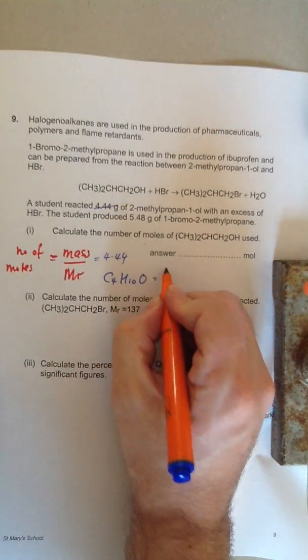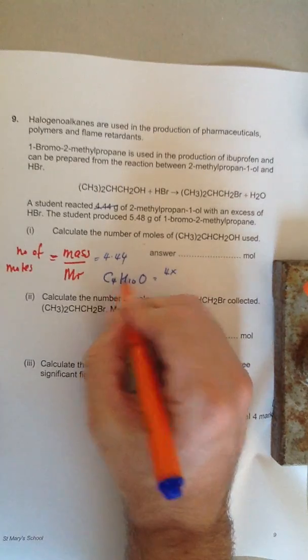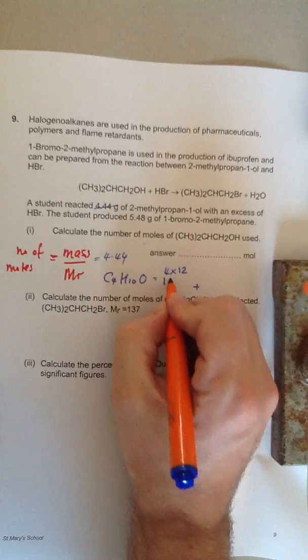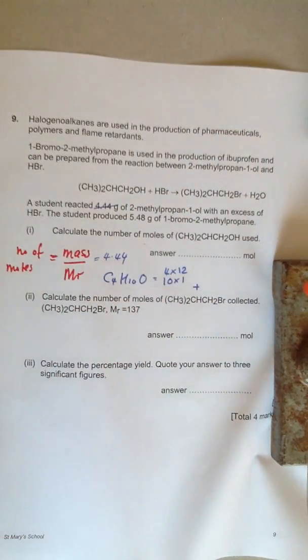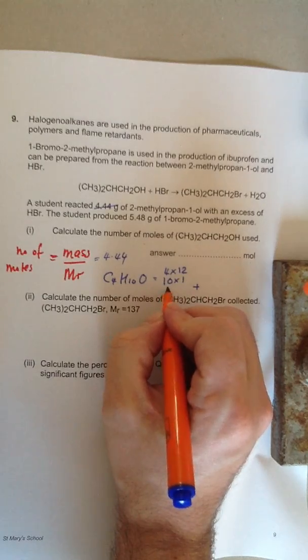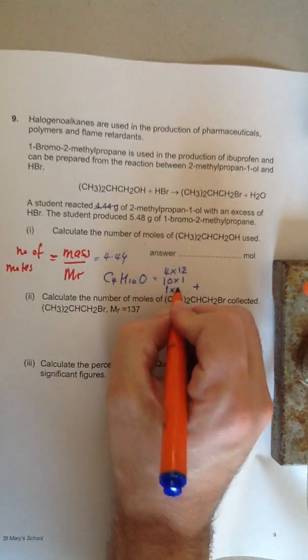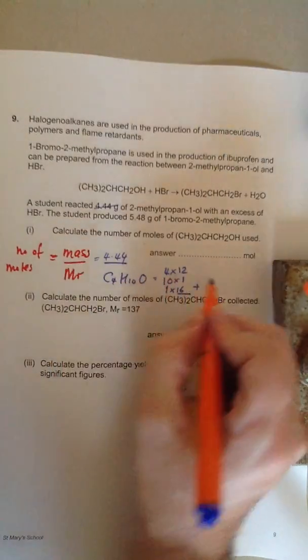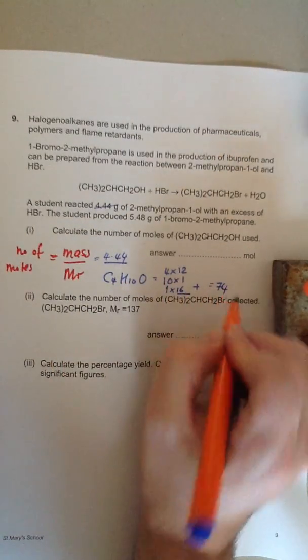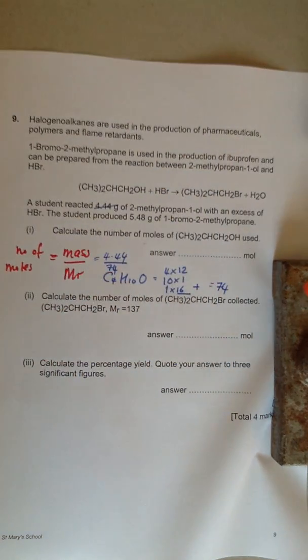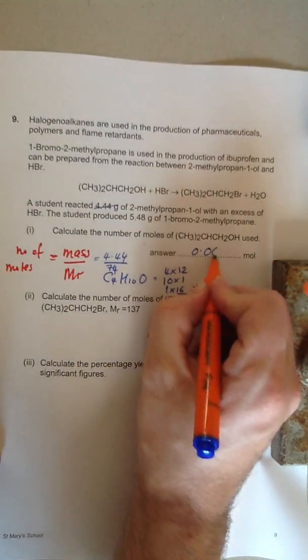So to work out the molecular mass, we say 4 times the mass of carbon, 12, plus we have 10 hydrogens, each of those weighs 1. We get this information from the periodic table. And there is 1 oxygen, which is 16. Add them all together, and the MR is 74. So we say it's 4.44 divided by 74 is 0.06.